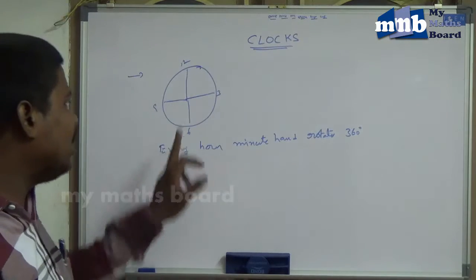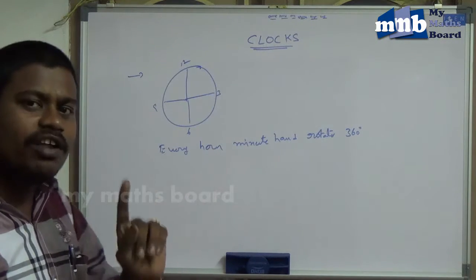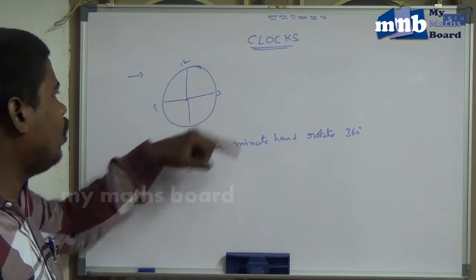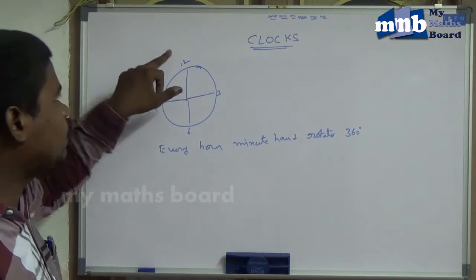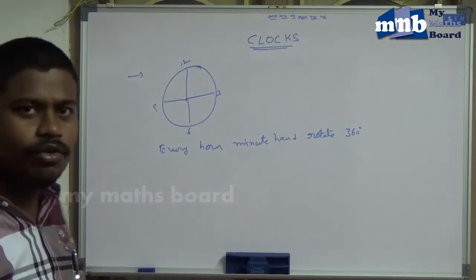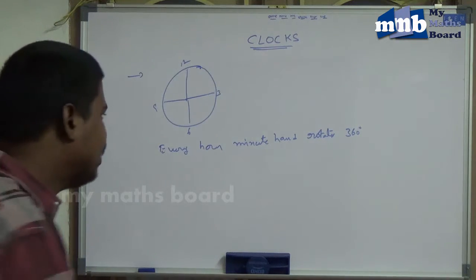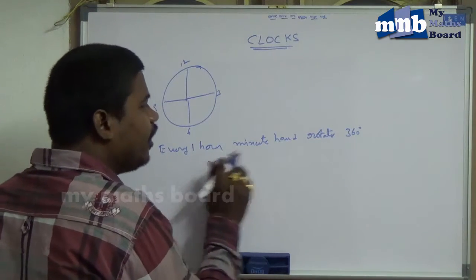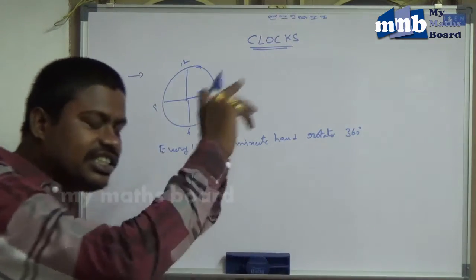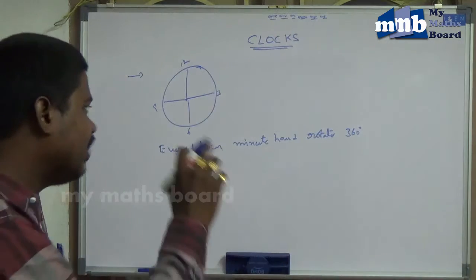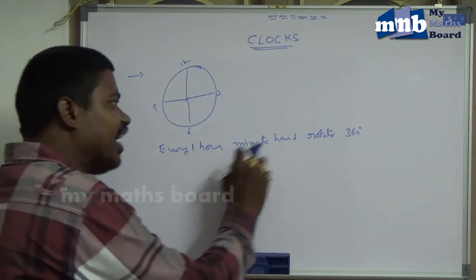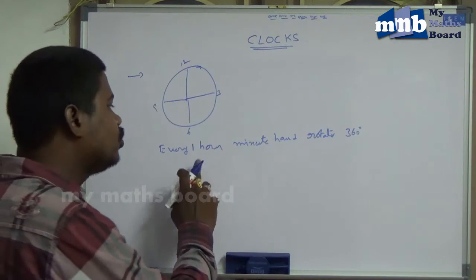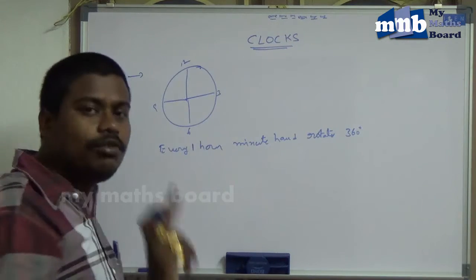Today, generally, we take one hour calculation: the minute hand comes starting from 12 and goes back to 12 again. One hour is going on. That means every one hour, the minute hand rotates 360 degrees — a complete rotation on the dial. So one hour is going on.